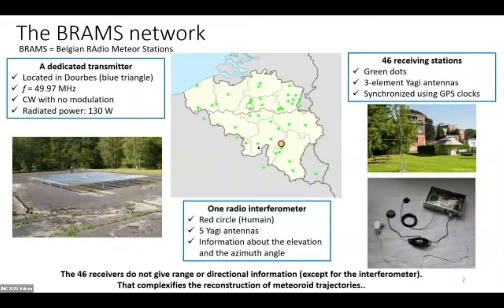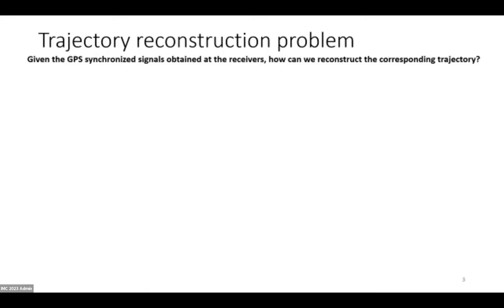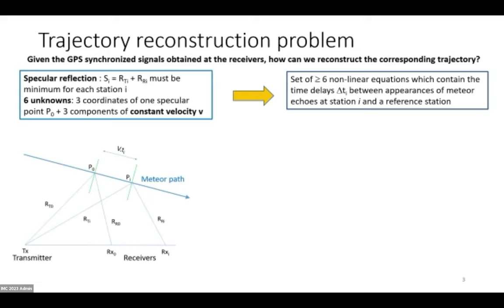How do we do that? Well, what we know is that all receivers are GPS synchronized, and we can use this information to try to get back the trajectory. The idea is that the reflection of radio waves on a meteor trail is assumed to be specular. Specularity means that the total distance traveled by the wave from the transmitter to the meteor trail back to the receiver is minimum, and this is valid for every pair transmitter-receiver.